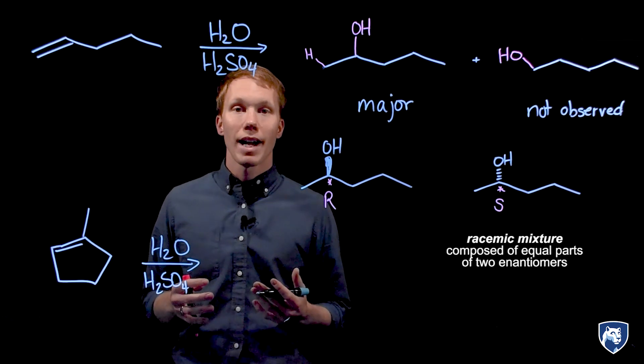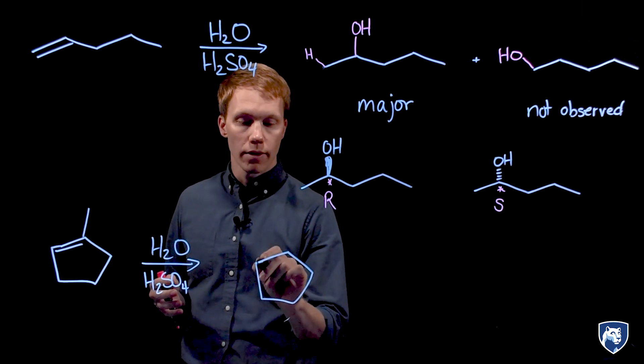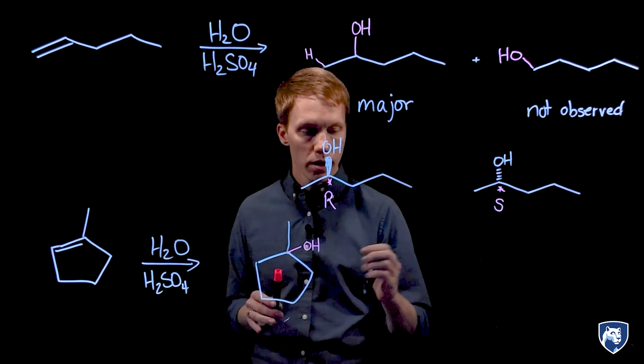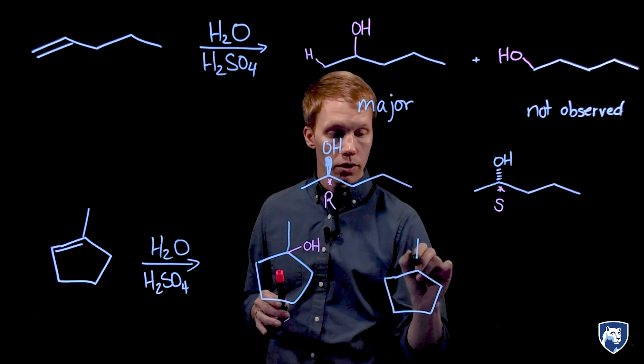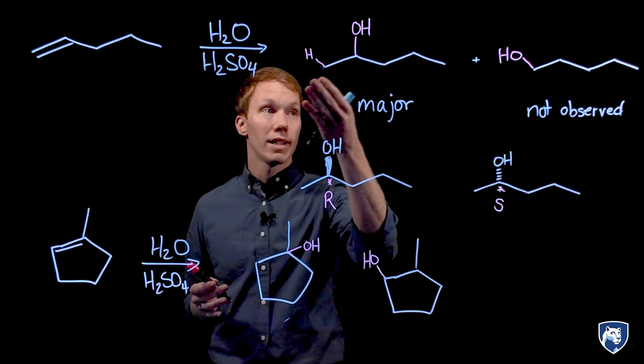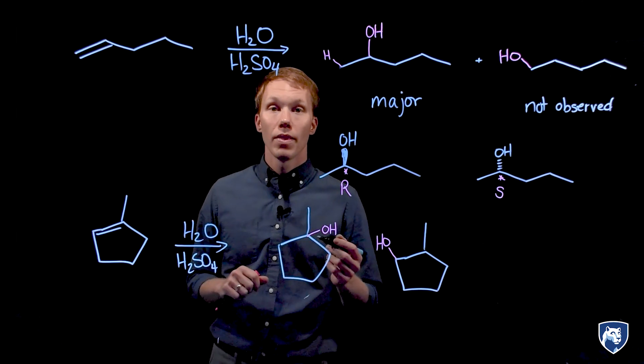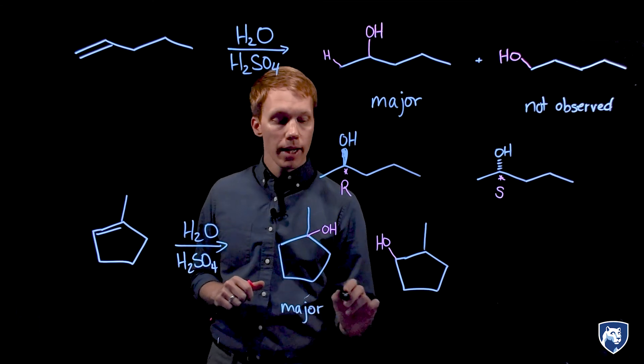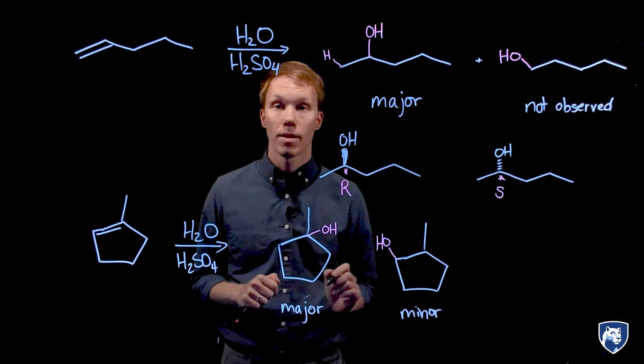When we carry out this reaction on 1-methylcyclopentene, we also get two constitutional isomers where the OH can add to the more substituted site or the OH can add to the less substituted site. Given what was observed in our example up above, which do you predict is going to be our major product? The more substituted alcohol is our major product, but here we do observe minor amounts of the less substituted alcohol.